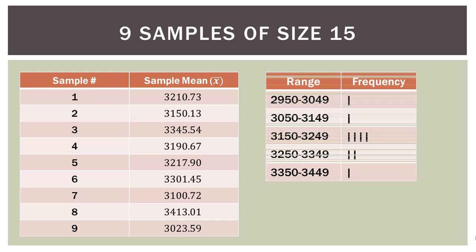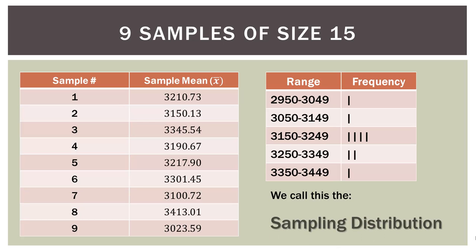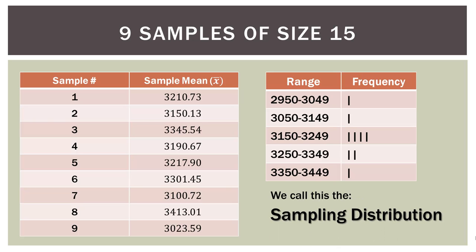Here are our samples again. I created some ranges of measurements. You can see that we had one measurement in the 2,950 to 3,049 range, one in the 3,050 to 3,149 range, and then four in the next range, et cetera. We call this the sampling distribution — a distribution of the sample means, a distribution of these nine sample means.